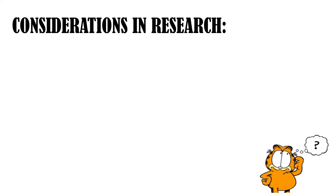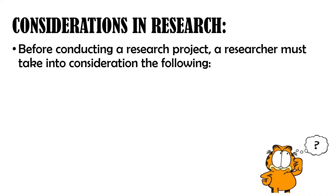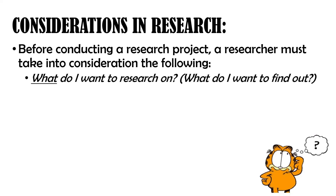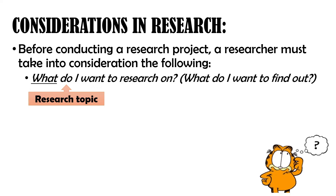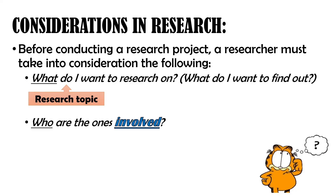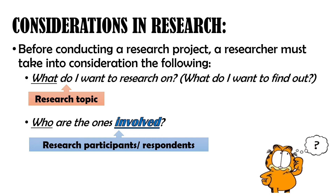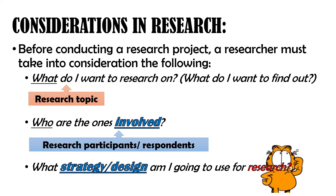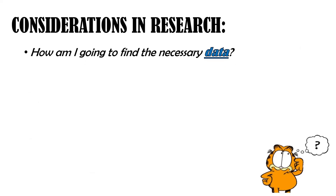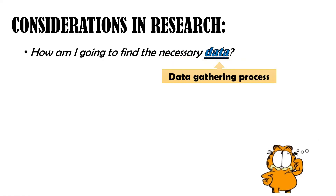We shall now proceed with discussing the considerations when conducting research. Before conducting a research project, a researcher must take into consideration the following: first, what do I want to research on or find out — this refers to the research topic. Next, who are the ones involved — this refers to the research participants or respondents. Then, what strategy or design am I going to use, because depending on the kind of research design, there would be different steps or procedures involved. Next, how am I going to find the necessary data — this means the data gathering process, which involves the instruments to be used as well as the process for gathering information from respondents.